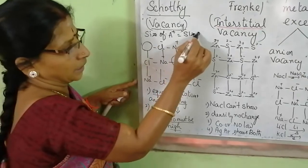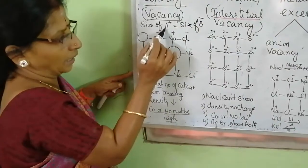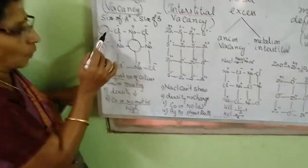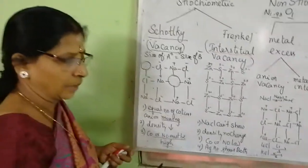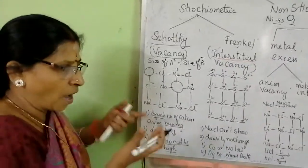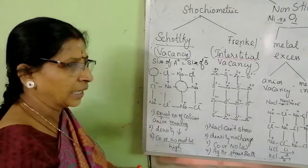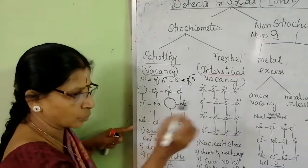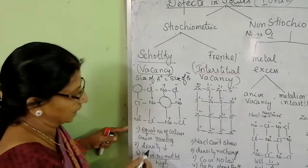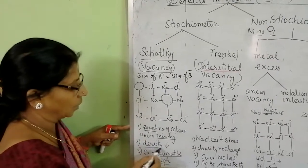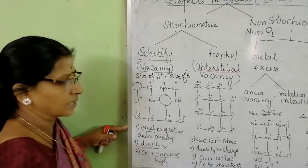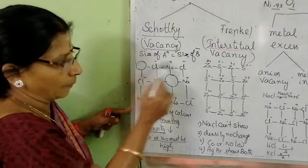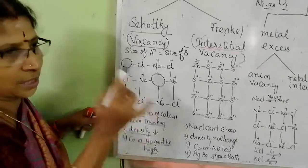Schottky defect can happen when size of cation is equal to the size of anions. Since the number of ions are decreasing, the mass of the unit cell will definitely decrease. What is density? Mass per volume — volume remains the same, so mass is decreasing, so density also decreases. Example: NaCl, rock salt structure. NaCl coordination number is 6:6.